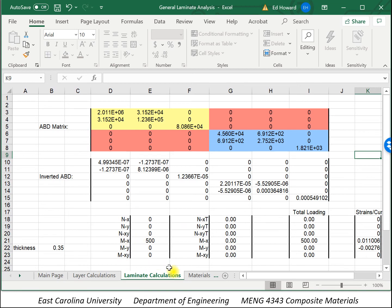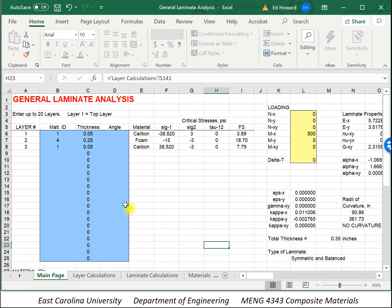So the calculations are made, and the critical stresses are shown here. And we use the Tsai-Wu failure criterion to pick out what's the critical stress. Is it at the top or is it at the bottom of the layer? And so those are the stresses we came up with before in the carbon epoxy. And because the compression is critical, you can see the factor of safety there of 3.89.